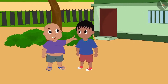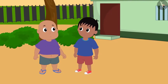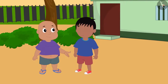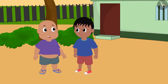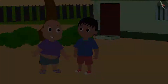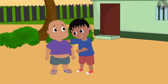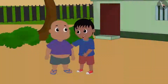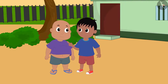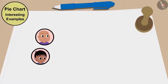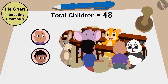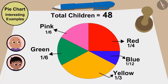Raju says, 'Mrs. Khan has told me that all the children have to wear the same color shirt for the school event. She has asked me to find out which color is most liked by the children.' Bablu replies, 'Come, I will help you. We will ask all the children to choose the color they like, then we will make a chart of this information, and we will know which color is most liked.' Raju and Bablu asked 48 children about their color choice and made a pie chart.